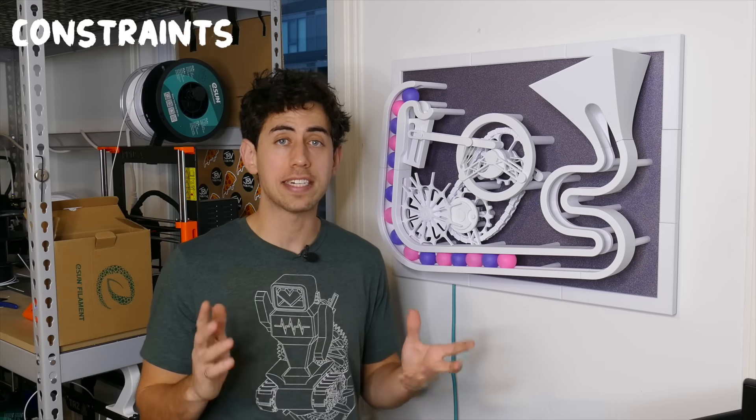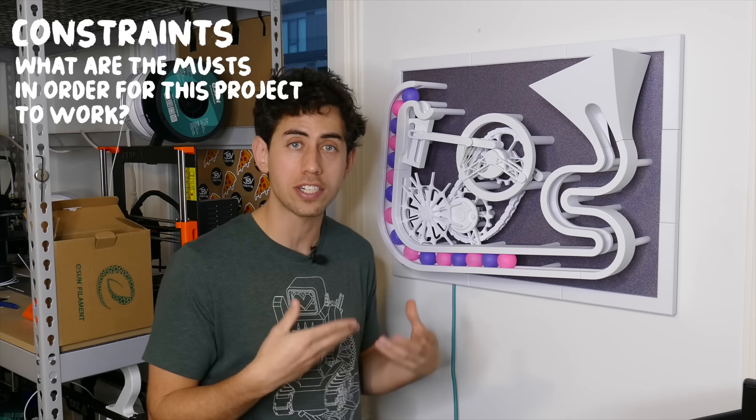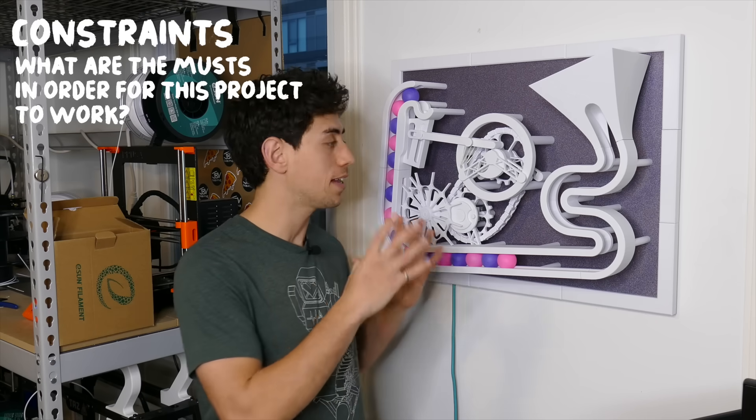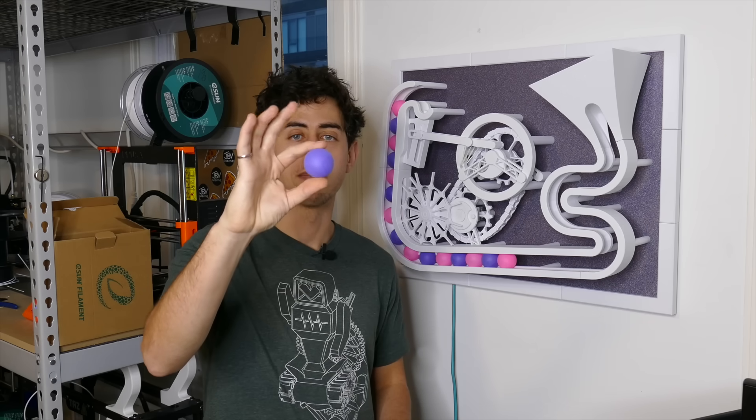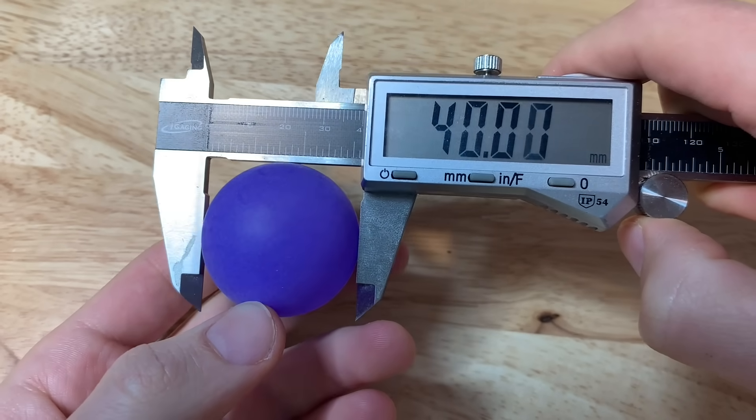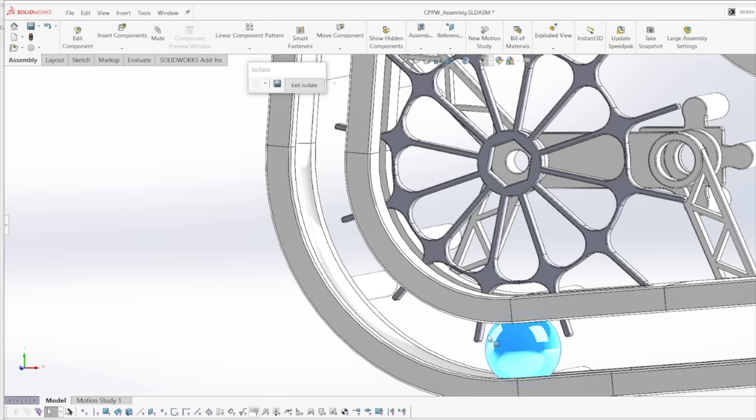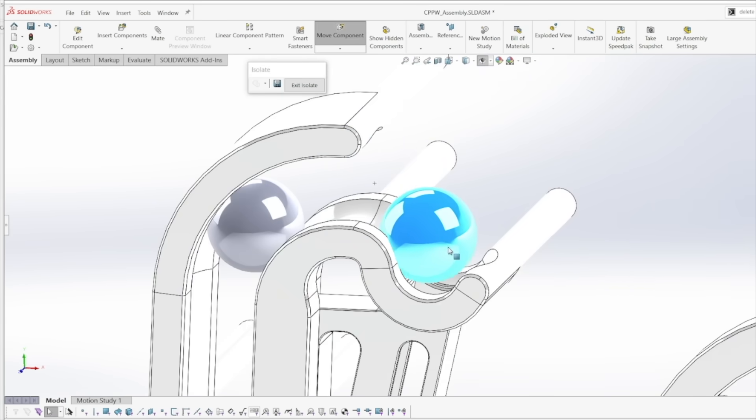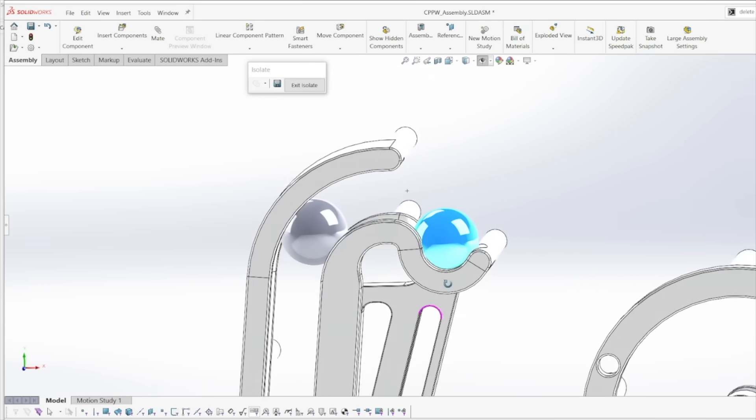So normally with these projects, I always start with constraints. Constraints are basically the rules or the things that we must follow in order to make this thing work. The easiest constraint for me to start with, the size of a ping-pong ball. This is a 40 millimeter ping-pong ball. So basically the track, the dimensions of the Geneva mechanism, the launcher, all of those have to be based off of the size of the ping-pong ball.